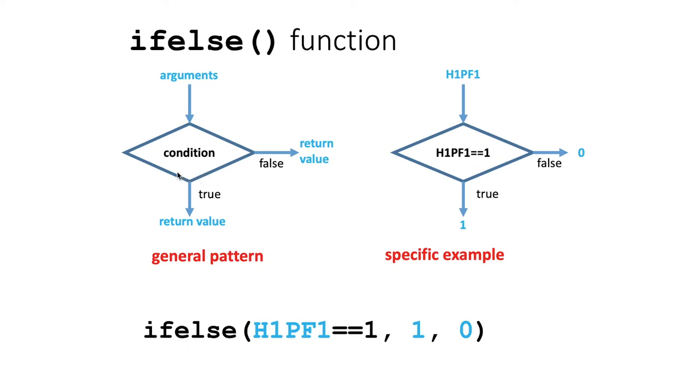Fundamentally, the ifelse function evaluates some condition as a boolean, so some condition is either true or false. If that condition is true, it returns one value. If that condition is false, it returns some different value, and it's your choice what those two values are.